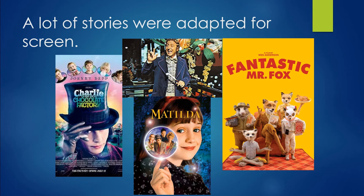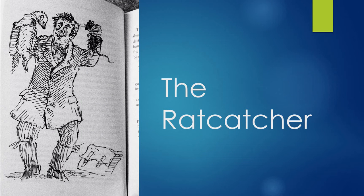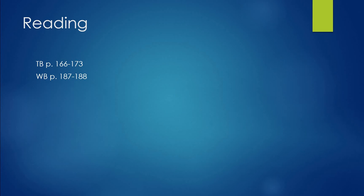Charlie and the Chocolate Factory has two famous adaptations — one with Johnny Depp as you can see. Then we have Matilda and Fantastic Mr. Fox. So many of his children's stories are quite famous. But we are not here to talk about his children's stories. We are here to talk about the short story The Rat Catcher. The Rat Catcher is quite a dark story — it's quite a little bit of a horror story actually, and it's a little bit weird as well, but it's interesting in its weirdness. You can find it in your textbook on pages 166 to 173.